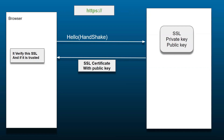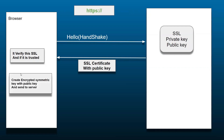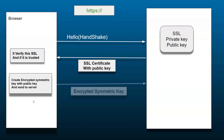After that validation, the browser creates a random symmetric key. It encrypts that symmetric key using the public key that was sent by the server, and sends the encrypted symmetric key back to the server.